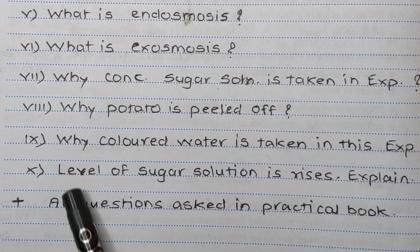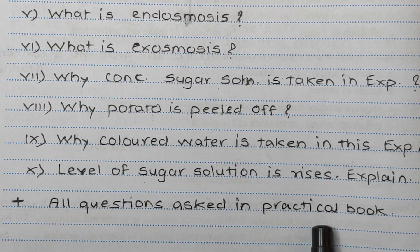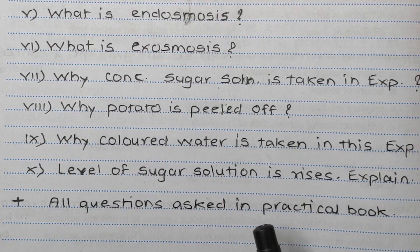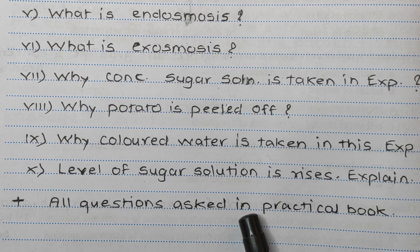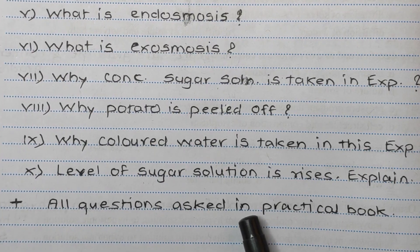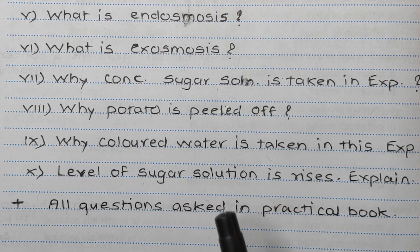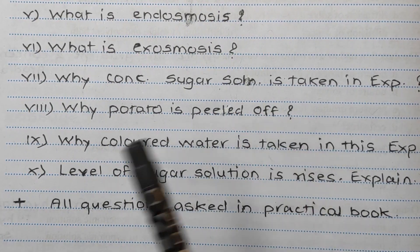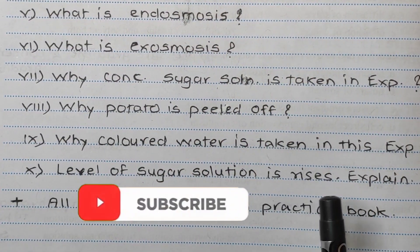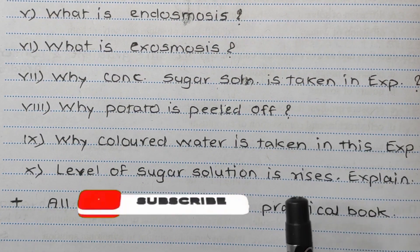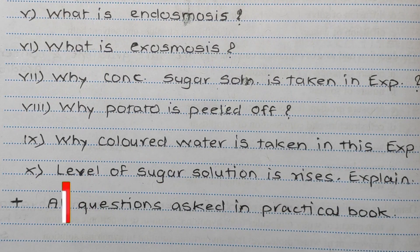These are the viva questions, along with all the questions given in the practical book about this experiment. Any one or two questions may be asked during the board exam by the external examiner or your teacher. Everything about the potato osmoscope, including the question answers and viva, has been covered. Thank you — if you like my channel, please subscribe so you can get question answers and viva questions for the next experiment.